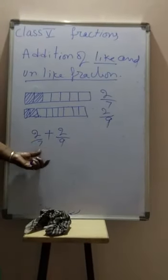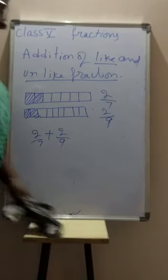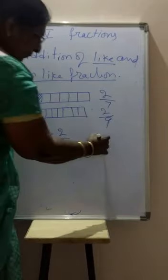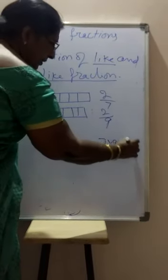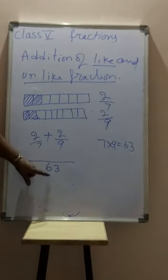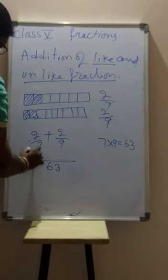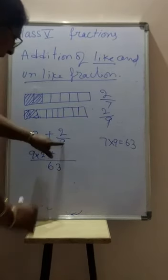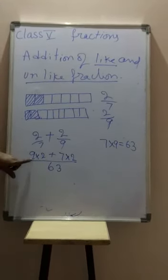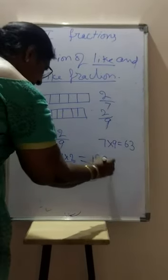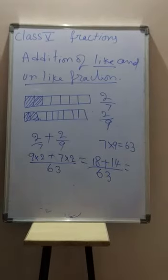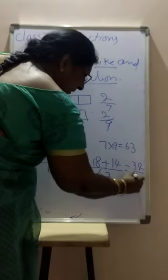7 multiplied by 9 equals 63, which is the LCM of these two numbers. How many times is 7 divisible into 63? 9 times. So multiply numerator 2 by 9 to get 18. How many times is 9 divisible into 63? 7 times. So multiply numerator 2 by 7 to get 14. The answer is 18 plus 14 over 63, which equals 32 by 63.